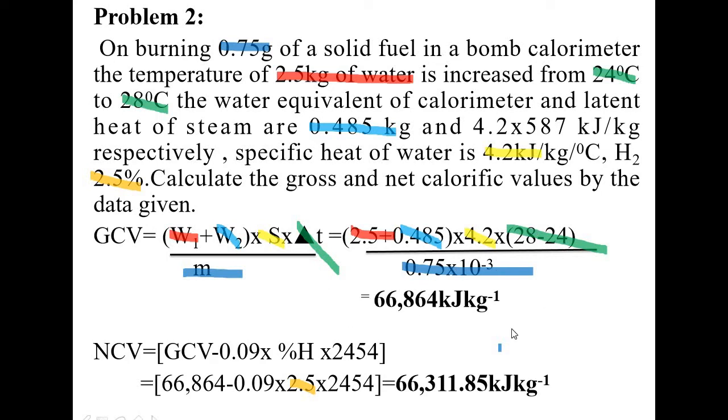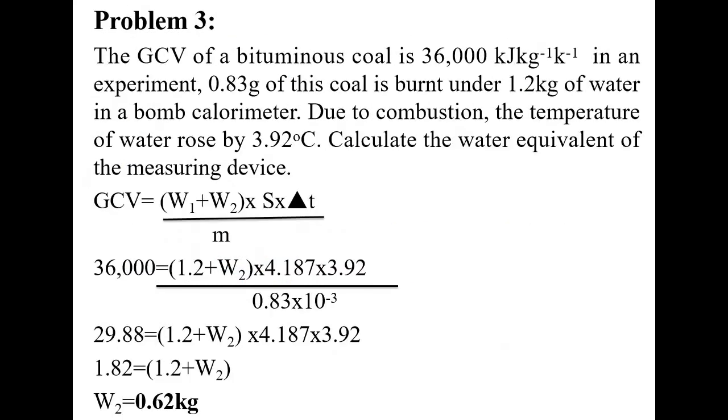NCV is GCV minus latent heat of steam per kg of fuel. Substitute this value, then 0.09 as such, percent hydrogen is given as 2.5, then 2454, so you will get 66,311.